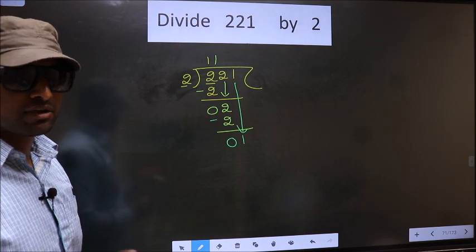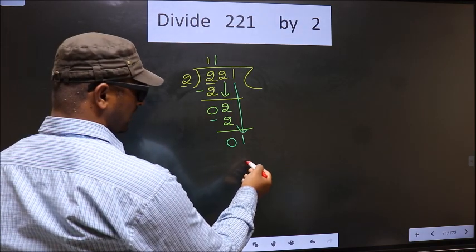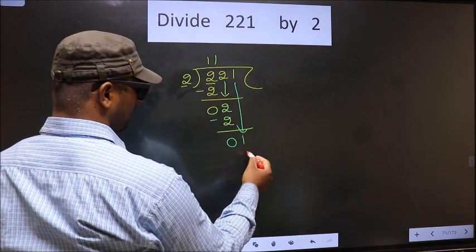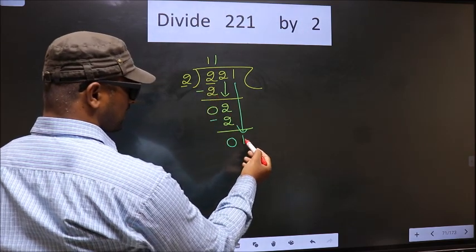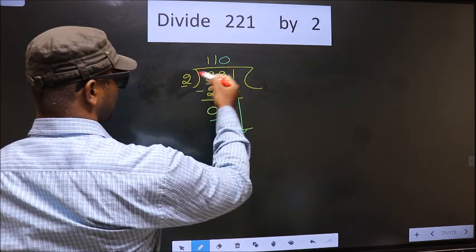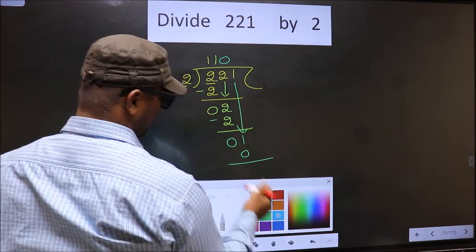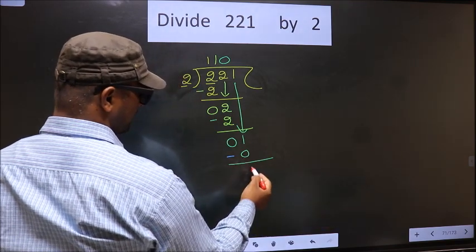Instead, what you should think of is what number should we write here? If we write 2 here, that is larger than 1. So what we do is we take 0 here. So 2 into 0, 0. Now you subtract 1 minus 0, 1.